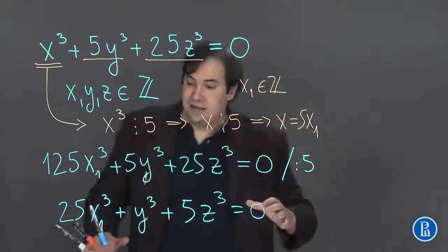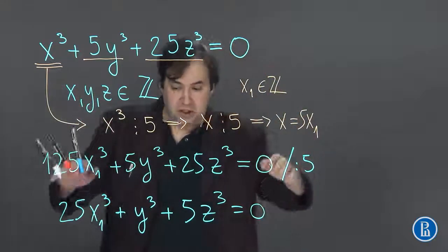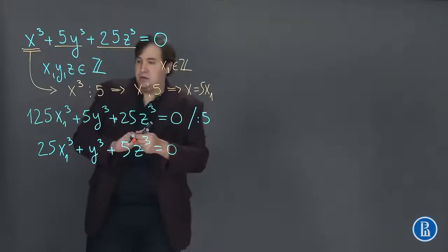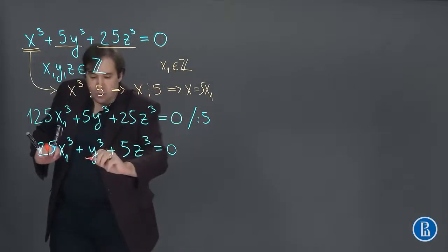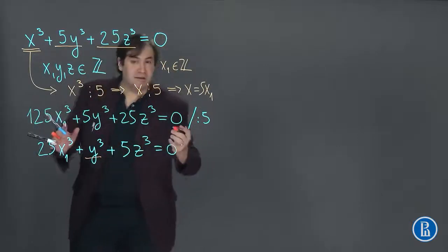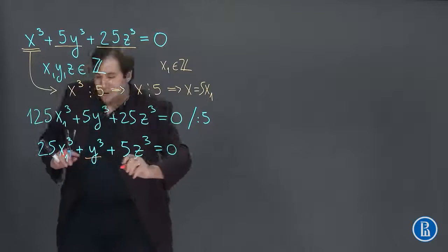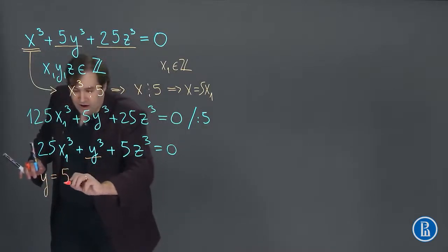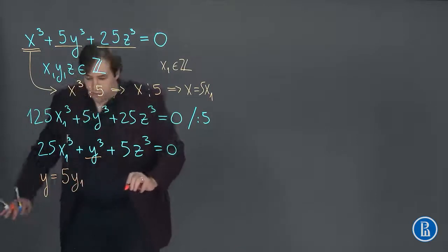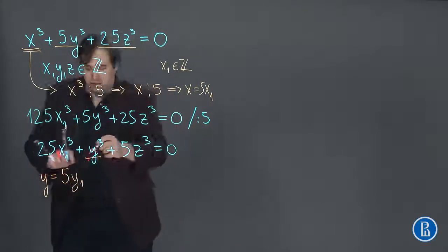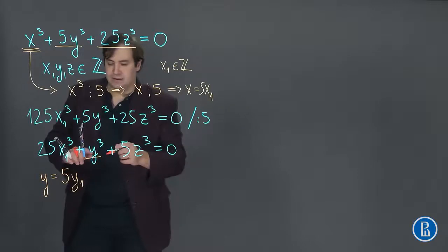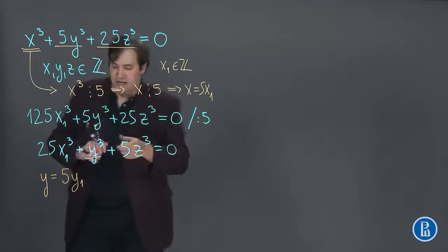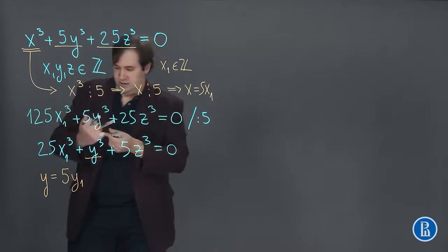So if we repeat the same procedure with this equation here, we will notice that y³ must be divisible by 5. So y must be divisible by 5. So y is equal to 5 times y₁.